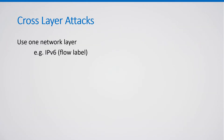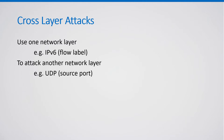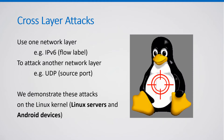Cross-layer attacks use one network layer, such as IPv6, to attack another network layer, such as UDP. We demonstrate these attacks on the Linux kernel, which is used by Linux servers, Linux desktops, Linux laptops, and by Android devices.